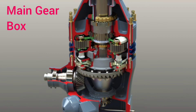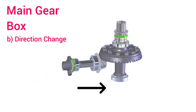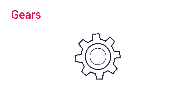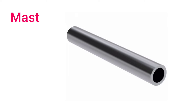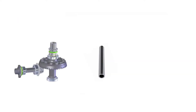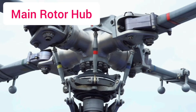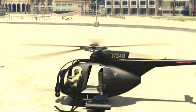The main gearbox, simply called MGB, is not only used to maintain RPM but also used to change the direction of power transmission by the use of different types of gears — in general, helical, bevel, or spiral bevel gears. The mast is a hollow cylindrical metal shaft that connects the main gearbox with the main rotor hub and transmits power from it. The top of the mast contains the main rotor hub, which is the component that holds the main rotor blades. As the mast transmits power, the main rotor hub and hence the main rotor blades also rotate.